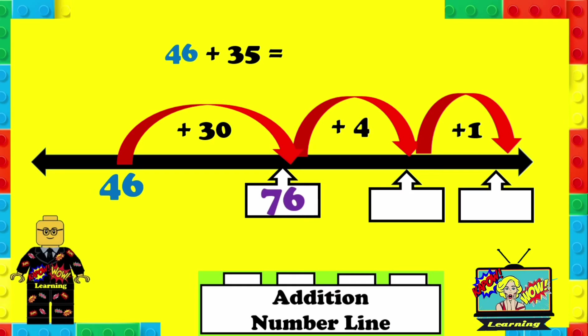Now we have 5 left, but we're going to add 4 because if we add 4 it takes us to 80 and we've got 1 left. So 80 plus 1 is 81, therefore 46 plus 35 equals 81.